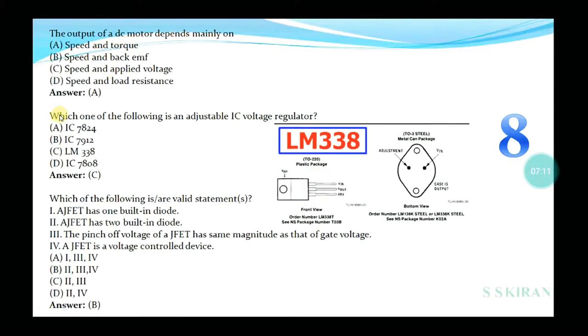The output of DC motor depends mainly on speed and torque, speed and back EMF, speed and applied voltage, or speed and load resistance? Yes, option is speed and torque. Which one of the following is an adjustable IC voltage regulator? We can vary the voltage value from 0 to 24 according to the specifications: IC 7824, 7812, LM338, or IC 7808? This option is C, LM338.